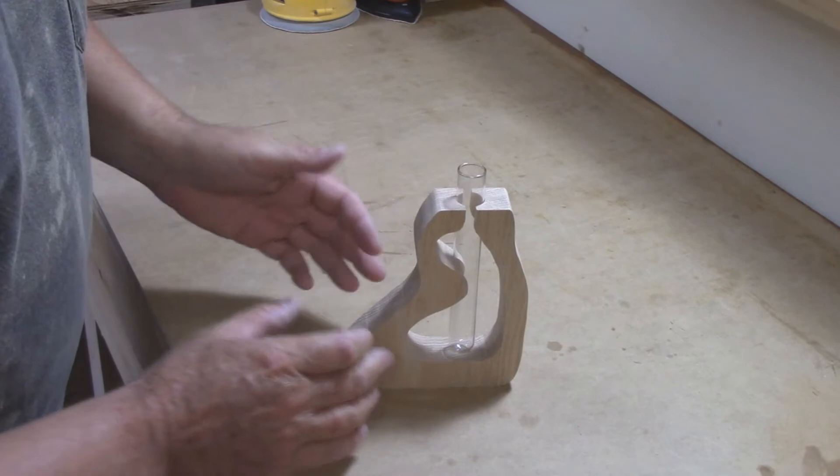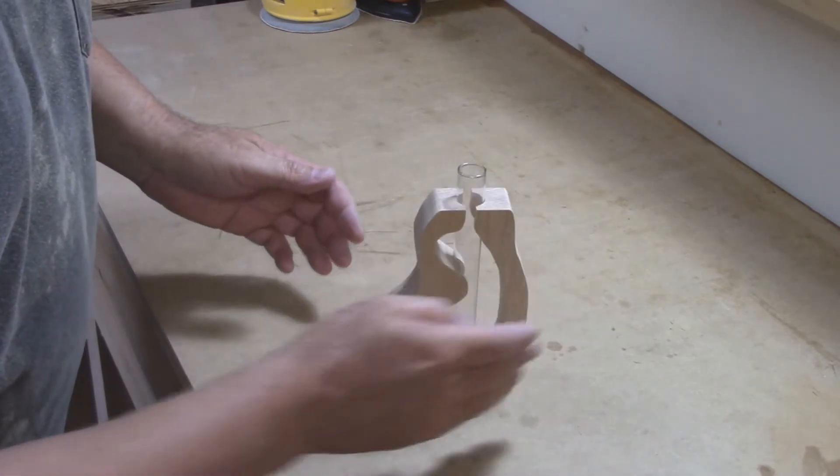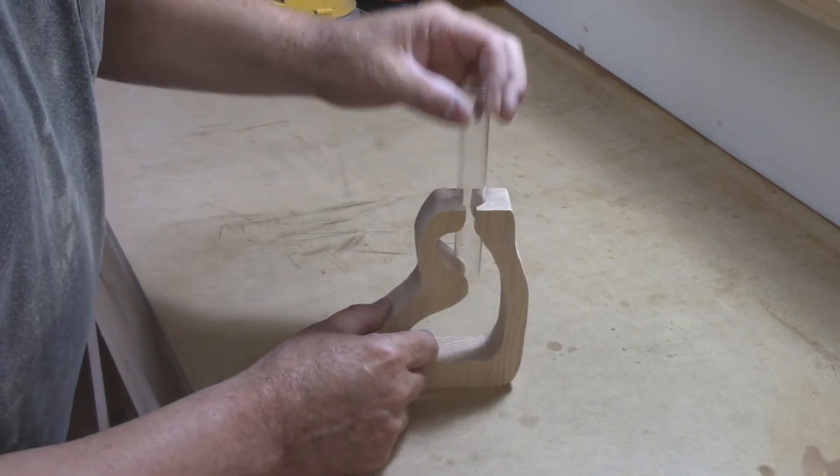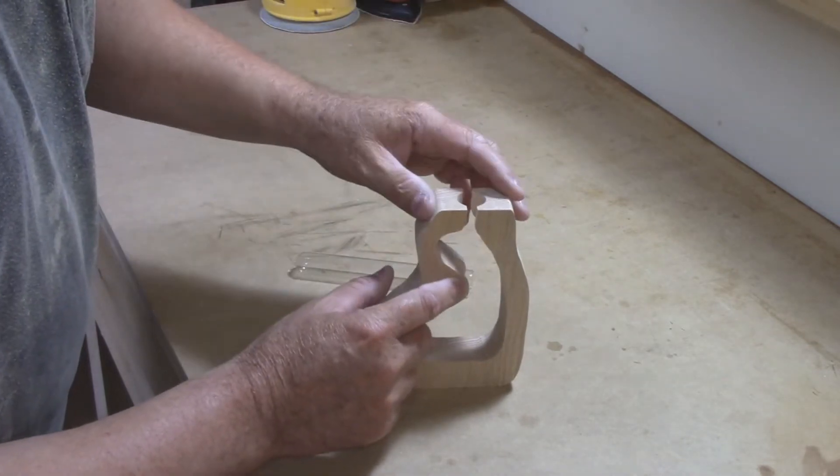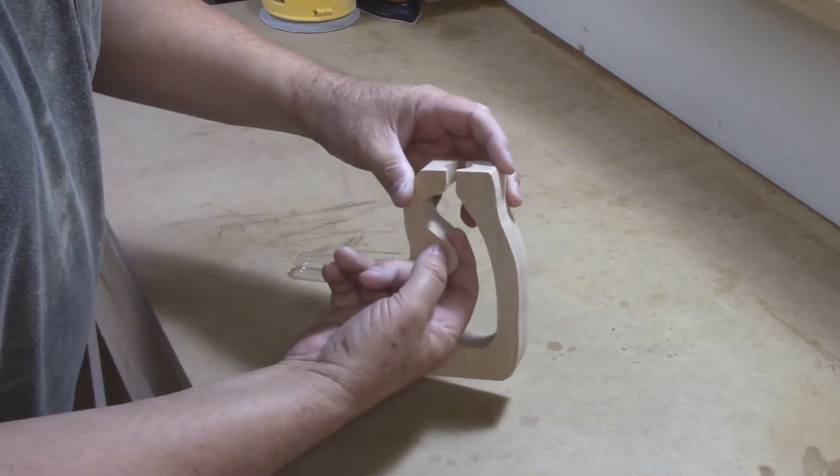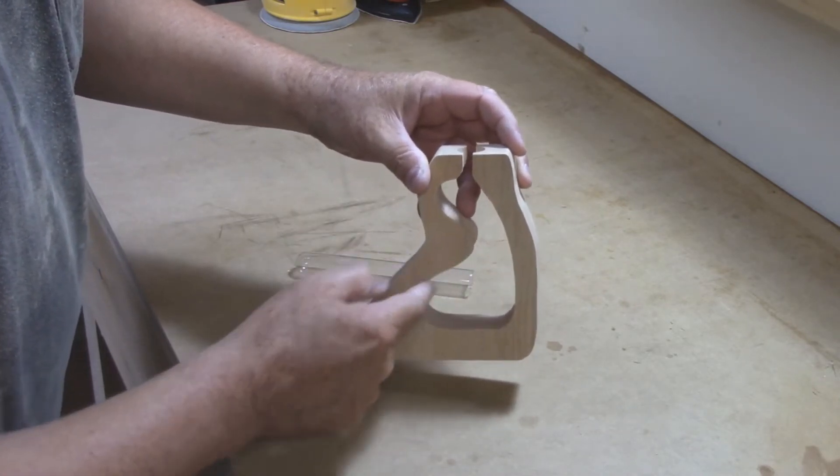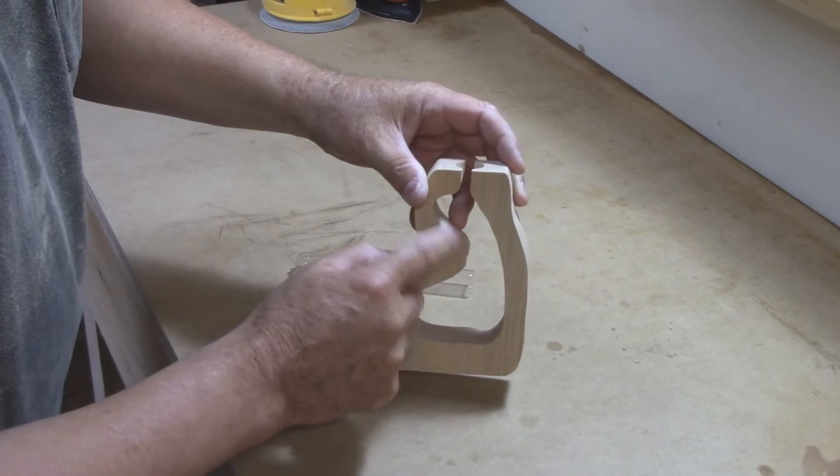Now I'm going to bring it over to the router table and just put on a little edging on it inside and out. But I'm going to stay away from this part here because of the drill hole. It's very thin so I'm just going to route all around it but stay away from this side.